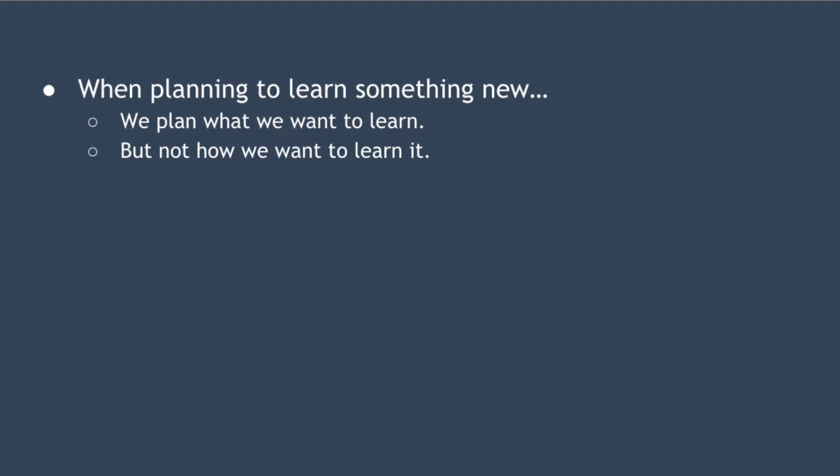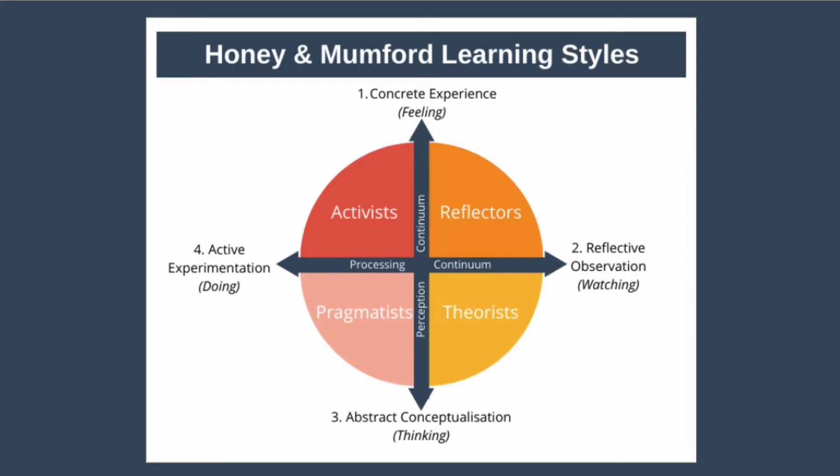Well, that's what the Honey and Mumford model is all about. So let's take a look at it. It was published by Peter Honey and Alan Mumford in 1986, and it defines four different styles that people use to learn something new. Those styles are activist, theorist, pragmatist, and reflector.